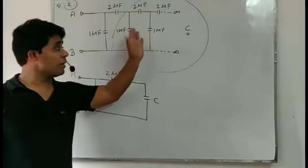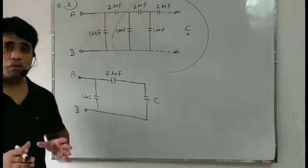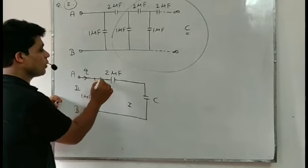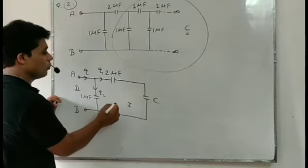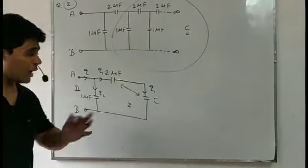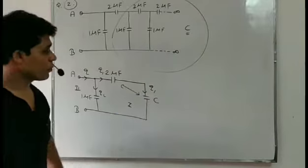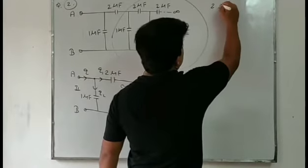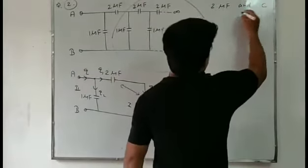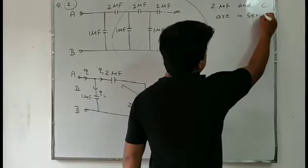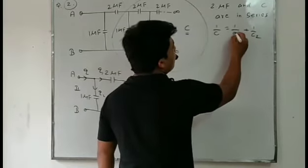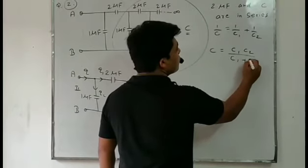This infinite circuit is now converted into a finite circuit. From the closed side, when charge flows it divides into parts Q1 and Q2. Q1 flows in these two — it means 2 microfarad and C are in series, having the same charge. Same charge means series, and we know the formula for series combination: 1/C1 + 1/C2, or equivalently C1·C2/(C1+C2). With C2 = 2 microfarad and C1 = C, that gives 2C/(C+2).